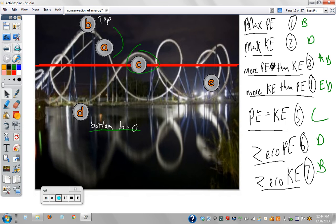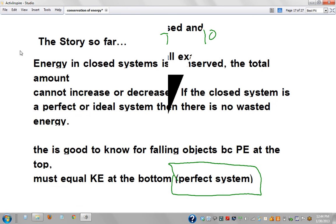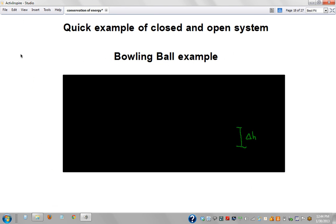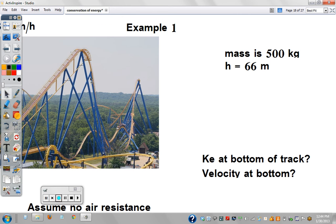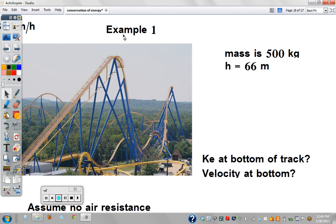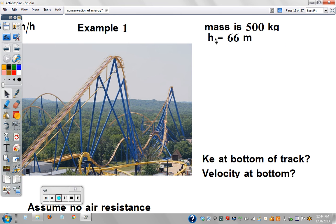Let's take a look at example 1. If we know the mass of a roller coaster at the top is 500 kg, and the height to the top is 66 meters, can you tell me the velocity at the bottom of the track and the kinetic energy at the bottom?